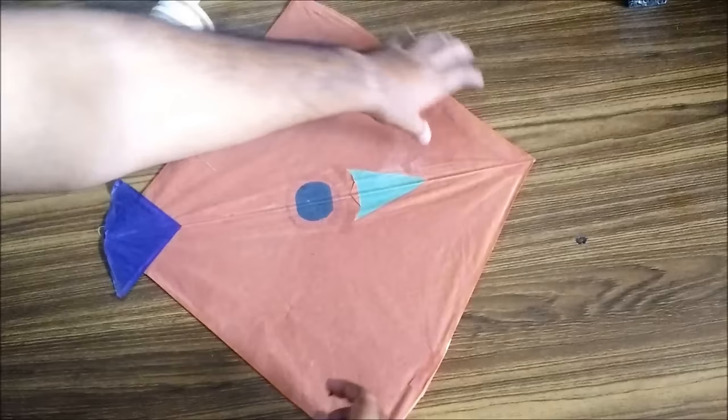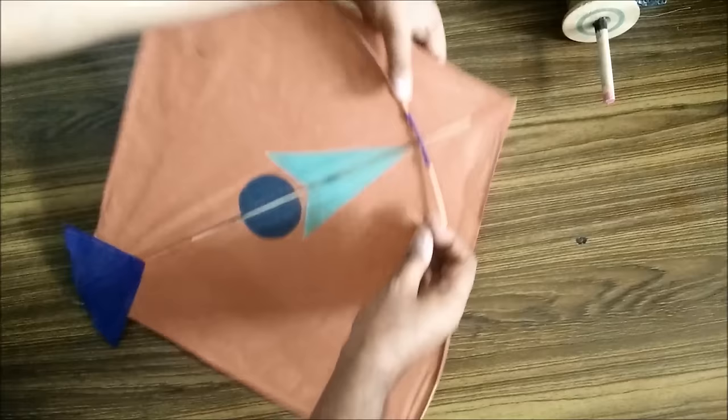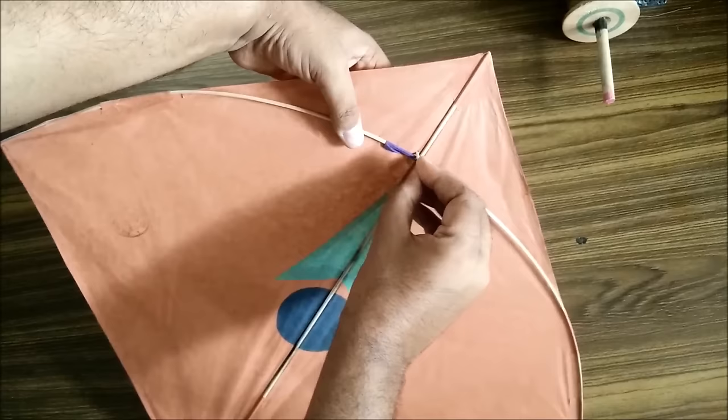So let's get started. The first thing that you need to do is take the kite and turn it this side to this intersection. On two diagonal ends of this intersection you need to make two holes.